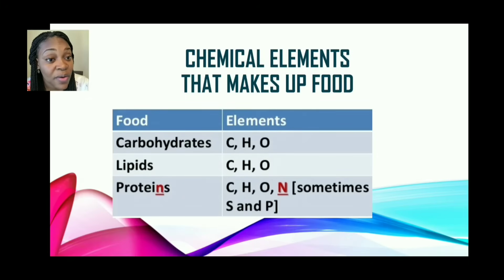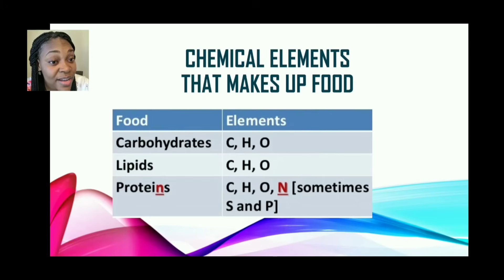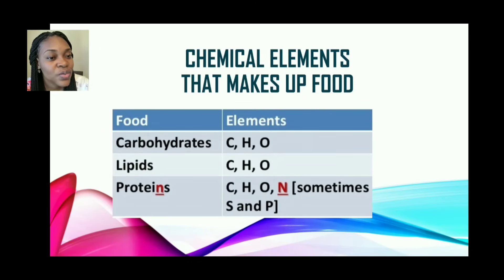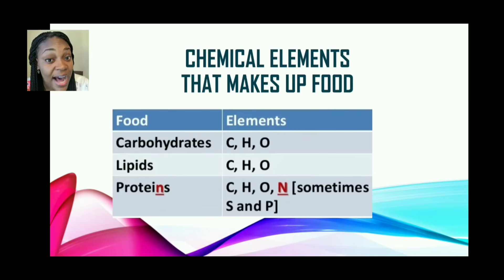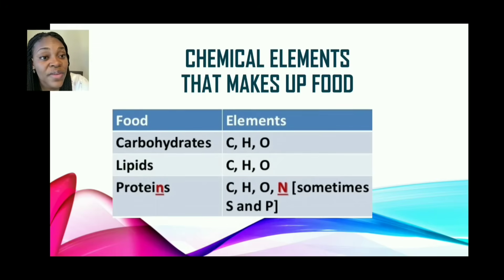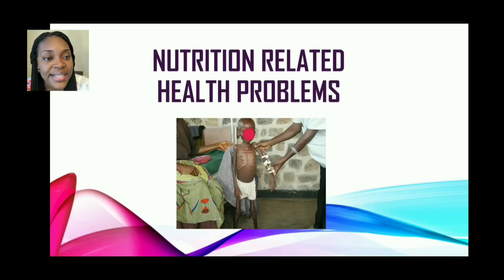Proteins are also made up of carbon, hydrogen, and oxygen, and additionally nitrogen (N), and sometimes sulfur and phosphorus. Nitrogen helps proteins to build and repair body tissues, while CHO — carbon, hydrogen, and oxygen — provides the body with energy. Remember that proteins are also a secondary source of energy. As we go on to look at the different types of nutrients in detail, we'll explore these further.